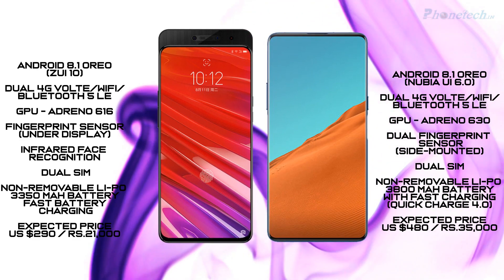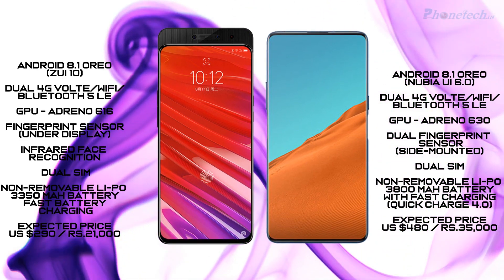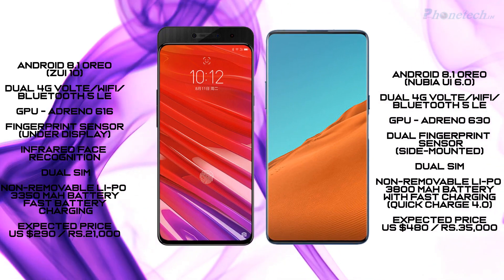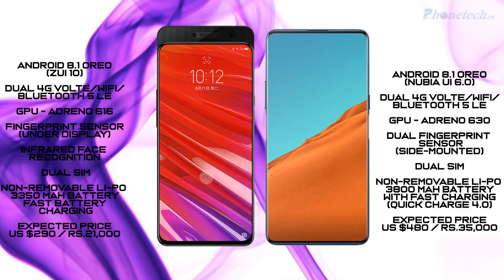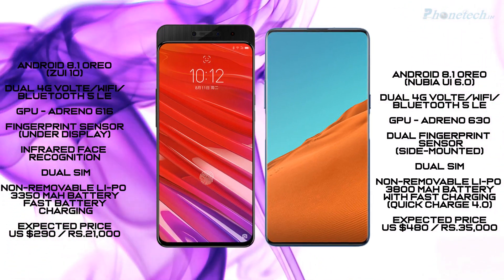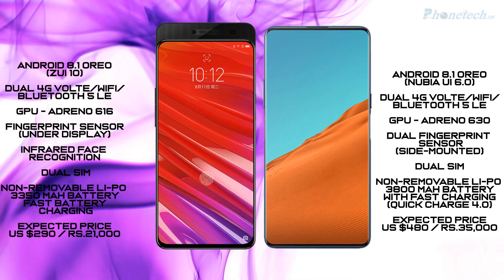Let's talk about the battery. The Z5 Pro has a 3350mAh non-removable battery with fast charging, and on the other side, the Nubia X has a 3800mAh non-removable battery with fast charging and Quick Charge 4.0.